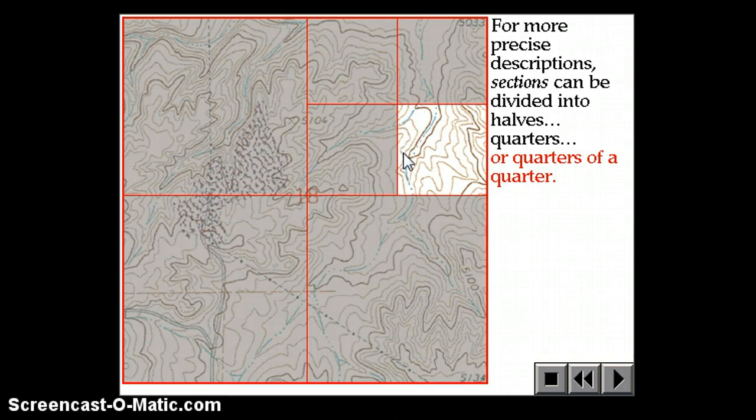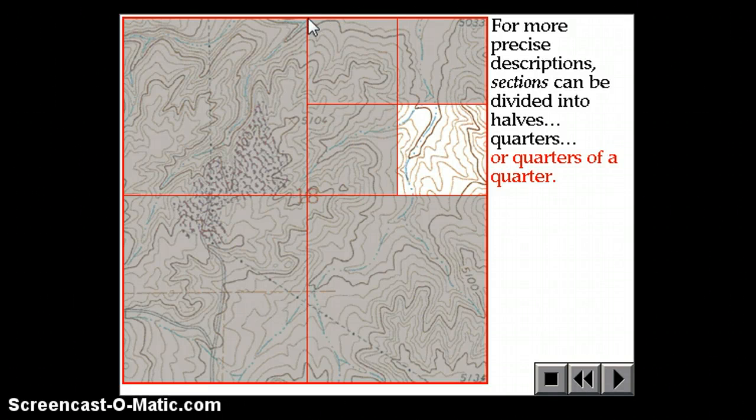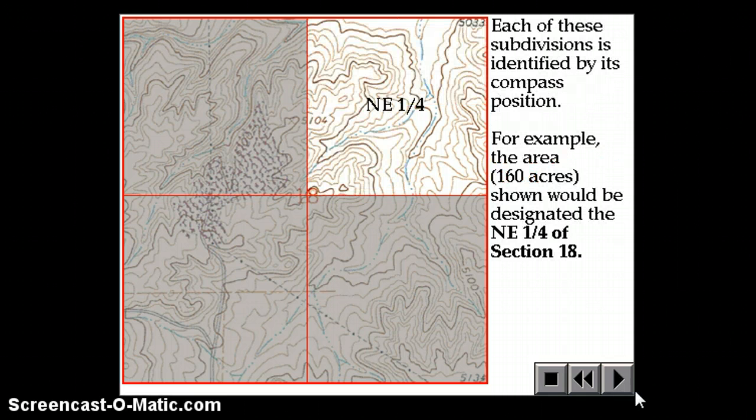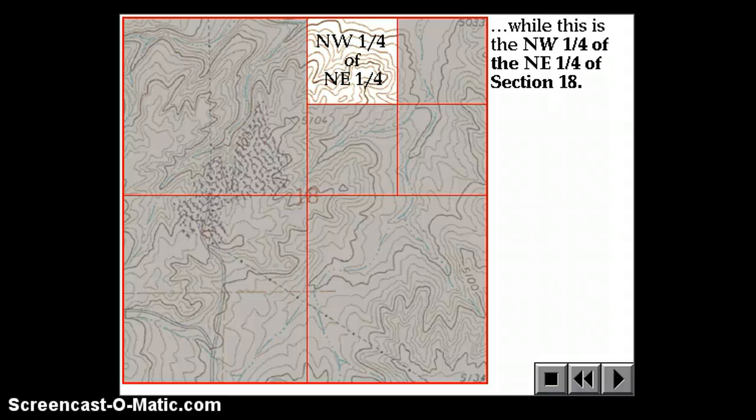Right now, this lighted one is the southeast corner of the northeast corner of Section 18. So southeast corner of the northeast corner of Section 18. This is the northwest corner of the northeast corner of Section 18.